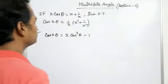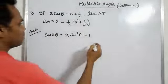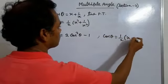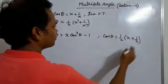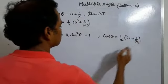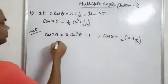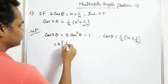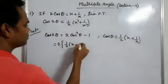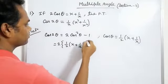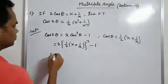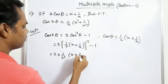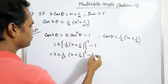Now, given that cos theta equals x plus 1 by x into half. Then we put the value of cos theta: equals 2 into half square into x plus 1 by x square minus 1.